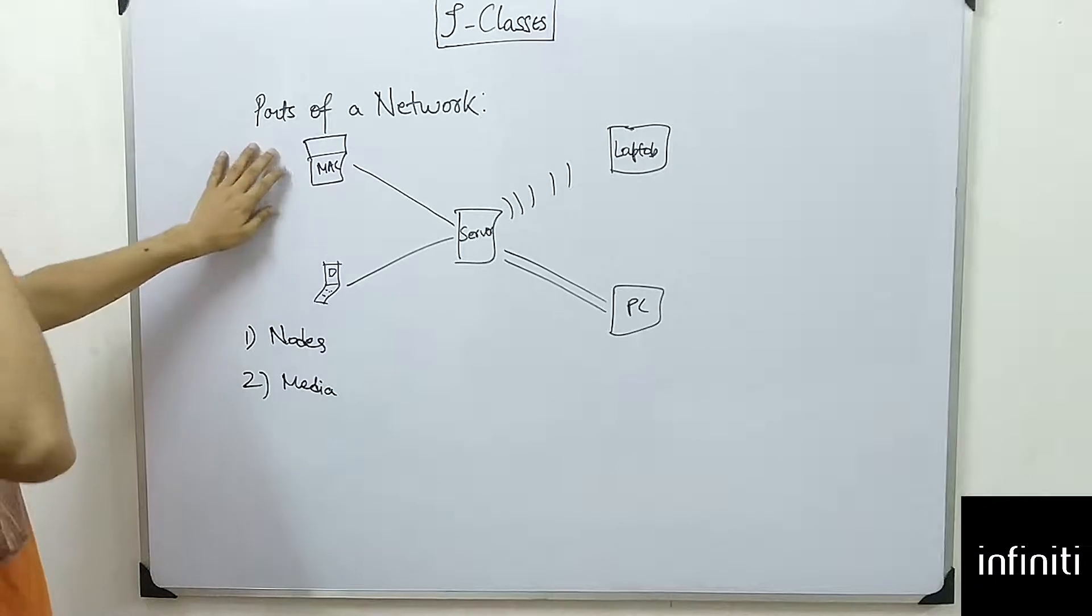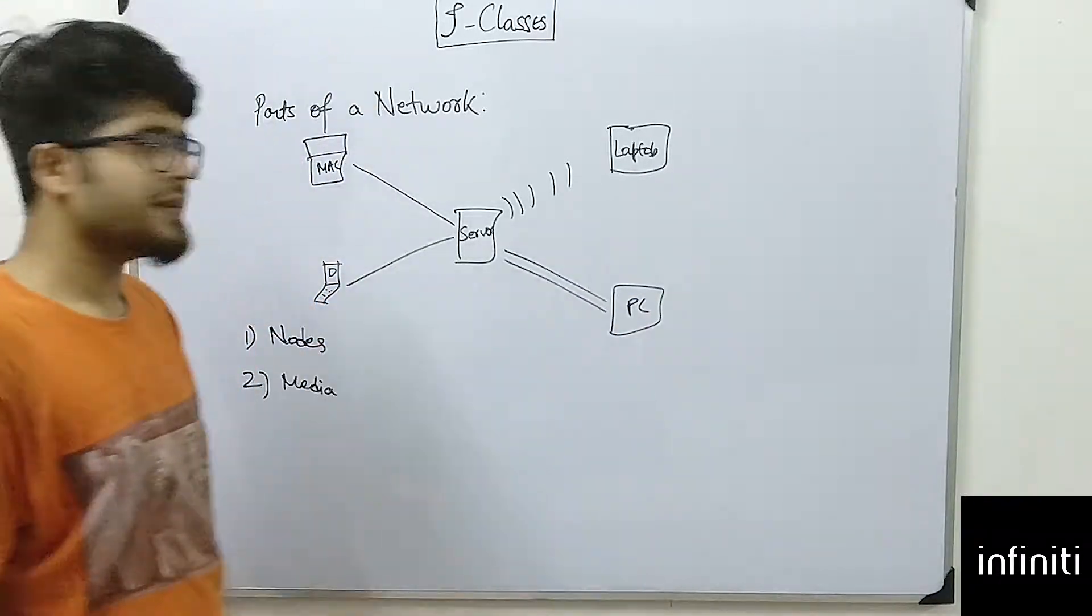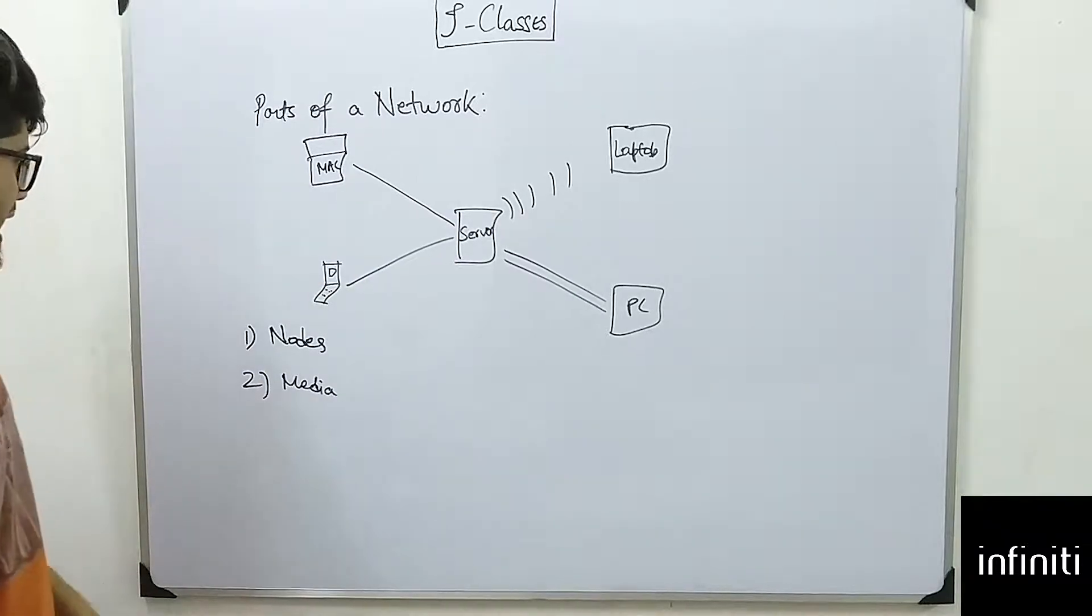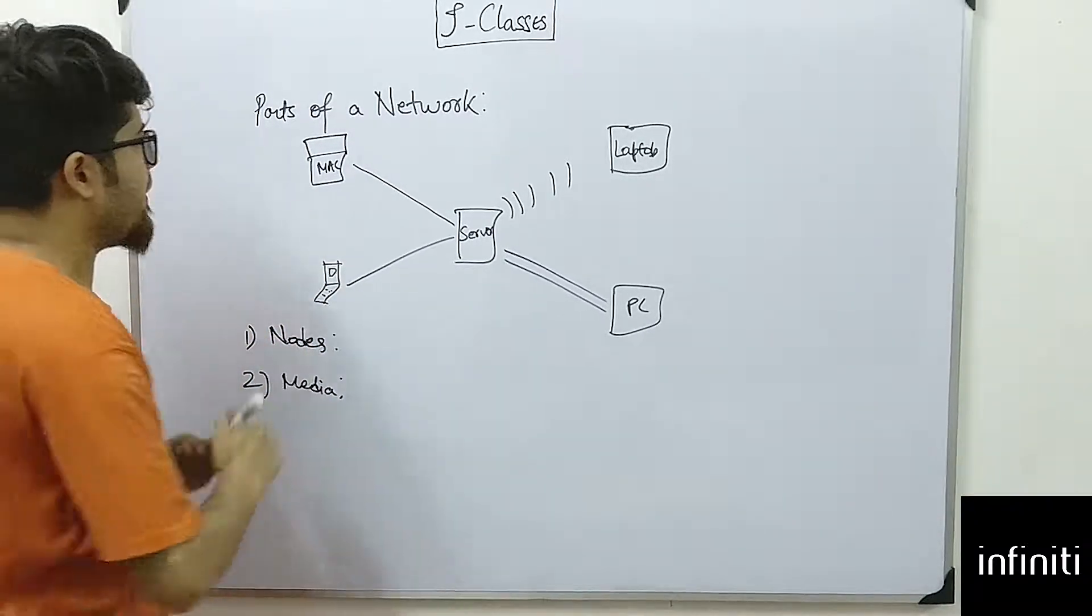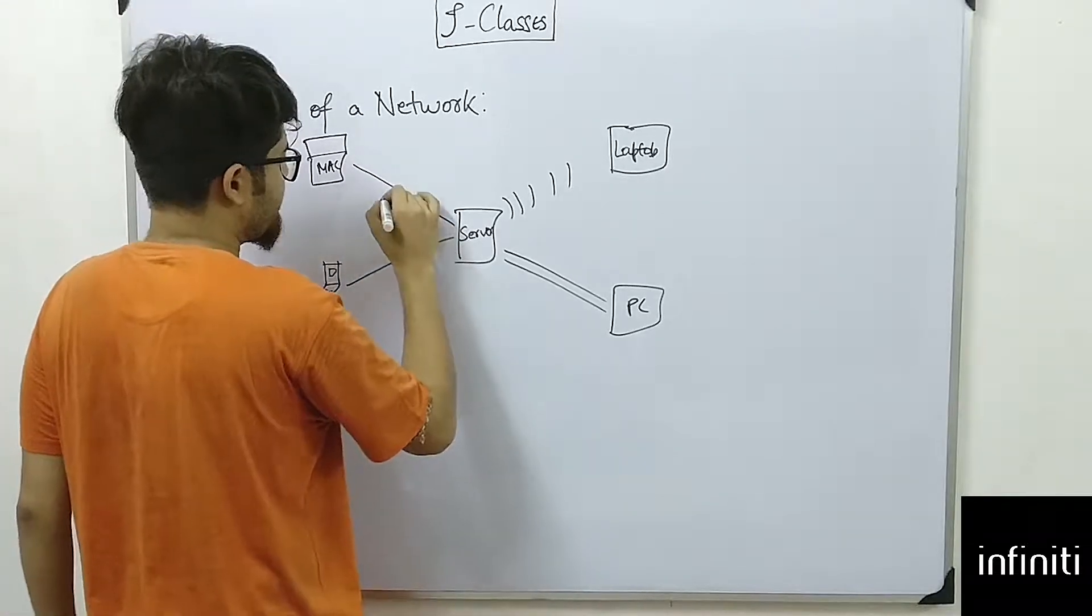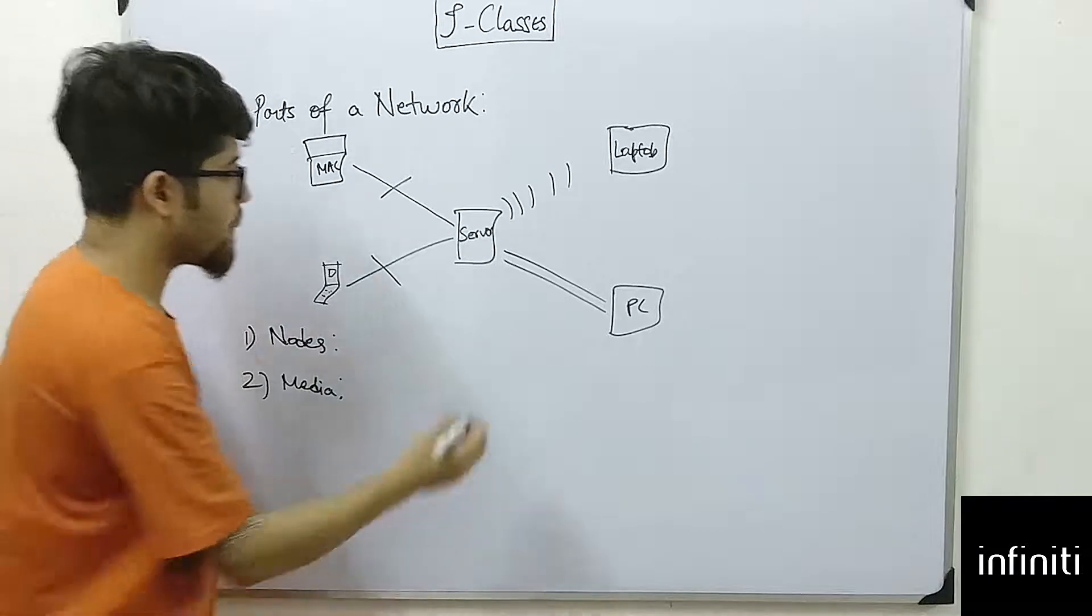In nodes we can see a Macintosh, a mobile phone, a laptop, or a PC that may be connected. In media we have wired media like twisted pair cable, coaxial cable, or optical fiber, and wireless media.